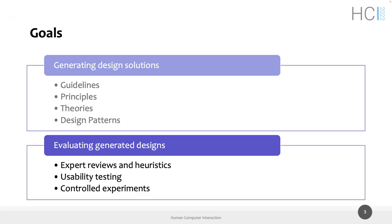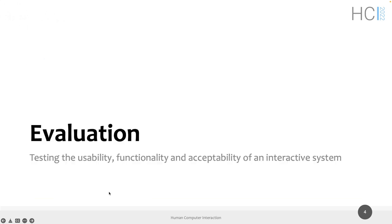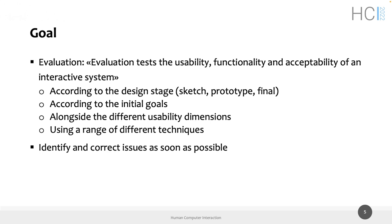We should already know how to generate design solutions with the help of guidelines, principles, and design patterns, and we are now starting to evaluate our designs. Evaluation in the HCI context means testing mainly three things of an interactive system: usability, functionality, and acceptability.